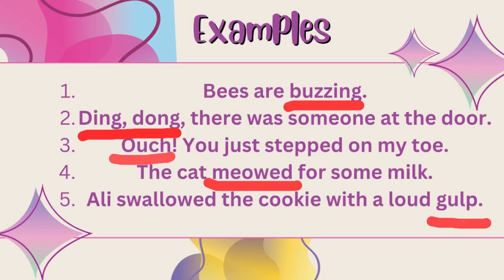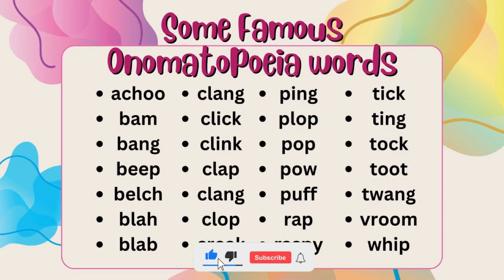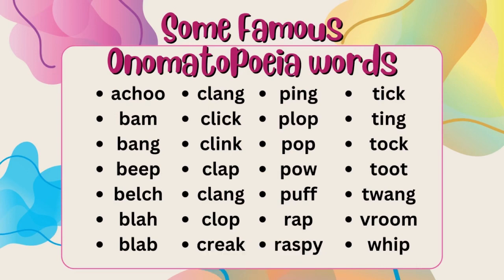'Gulp' کہتے ہیں نگلنے کی جو آواز ہوتی ہے — جب ہم کوئی چیز کھاتے ہیں تو نگلنے کا جو sound ہوتا ہے وہ 'gulp' ہوتا ہے۔ تو gulp اس جملے کے اندر onomatopoeia کا example ہے۔ ویسے تو onomatopoeia کے بیشمار examples ہیں، لیکن کچھ famous words جو onomatopoeia کے لیے استعمال ہوتے ہیں، ان کا ذکر میں نے کیا ہے۔